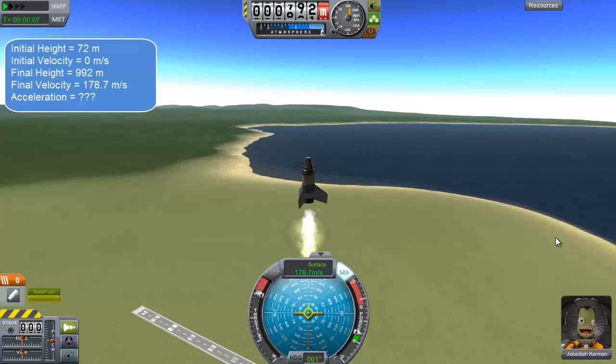which is 992, minus my initial, which is 72. This gives me my distance, which is r.